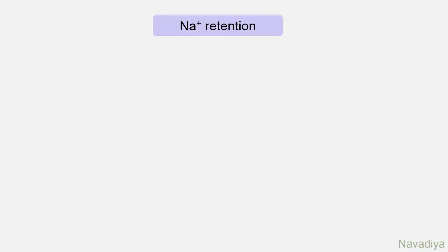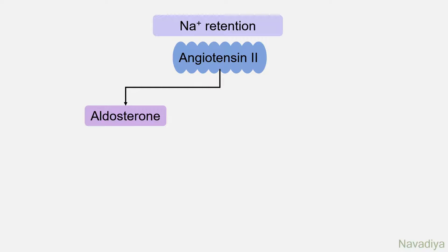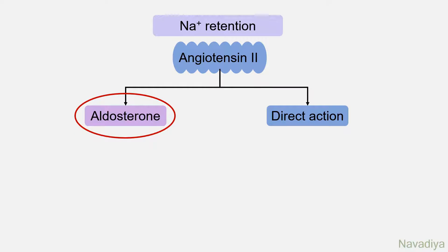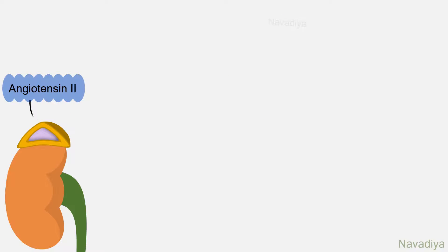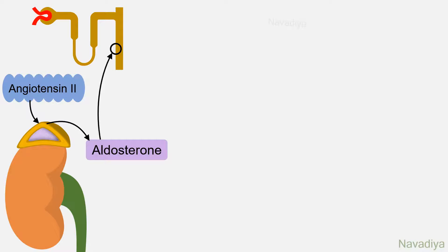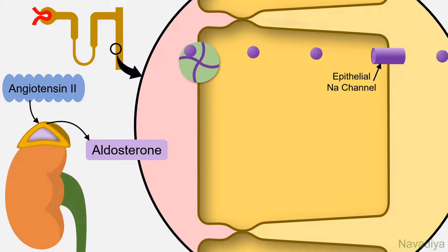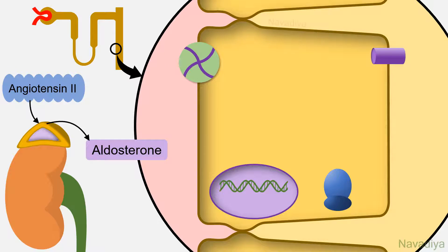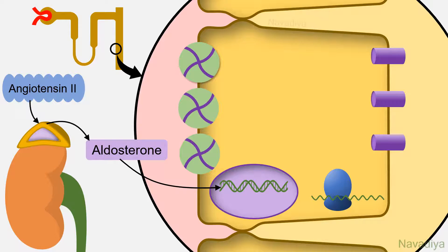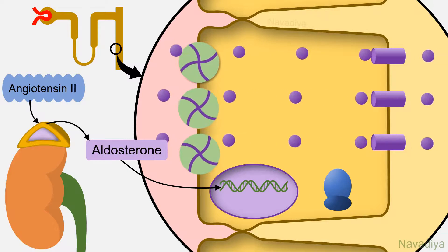The second effect is sodium retention and thereby retention of water by the kidney. Angiotensin II does this by two ways: by increasing release of aldosterone, as well as by its direct action. Regarding aldosterone — the major pathway — angiotensin II acts on glomerulosa cells of the adrenal cortex and stimulates release of aldosterone. Aldosterone acts on collecting duct principal cells, where sodium is reabsorbed by epithelial sodium channels at the apical membrane and sodium-potassium ATPase pump on the basolateral membrane. Aldosterone increases expression of genes for these sodium channels and sodium-potassium ATPase pump, so with more transport proteins, more sodium is reabsorbed.